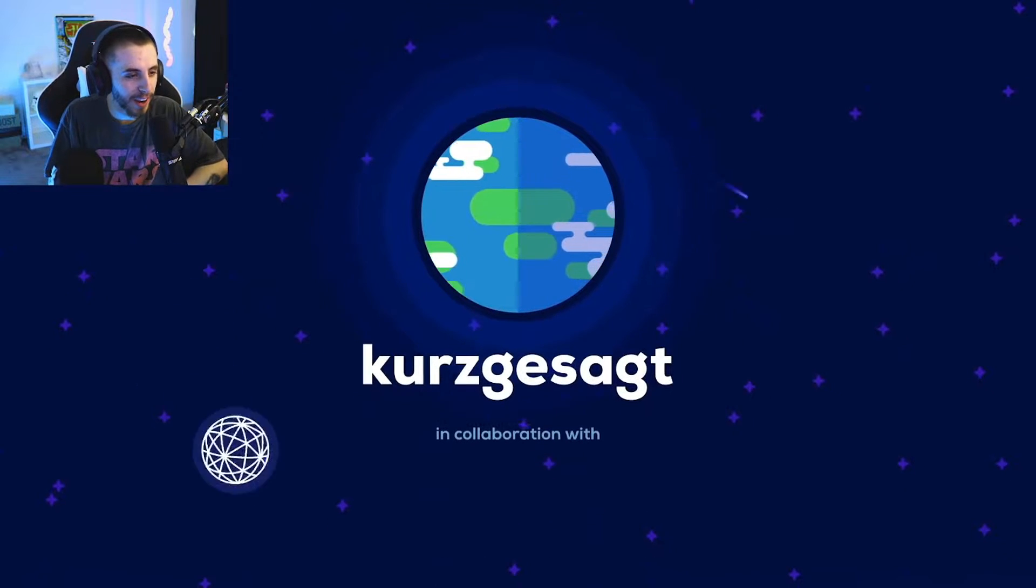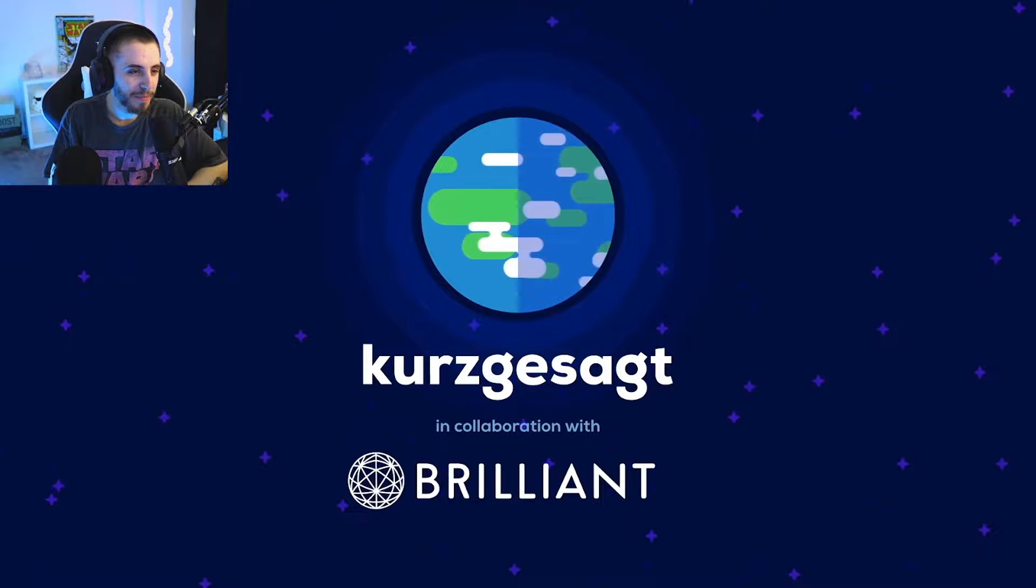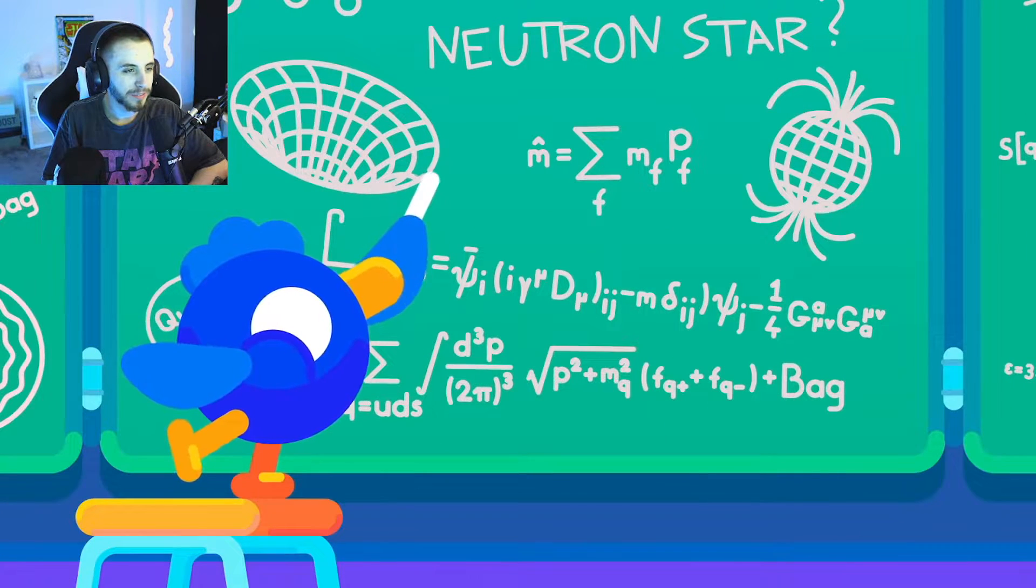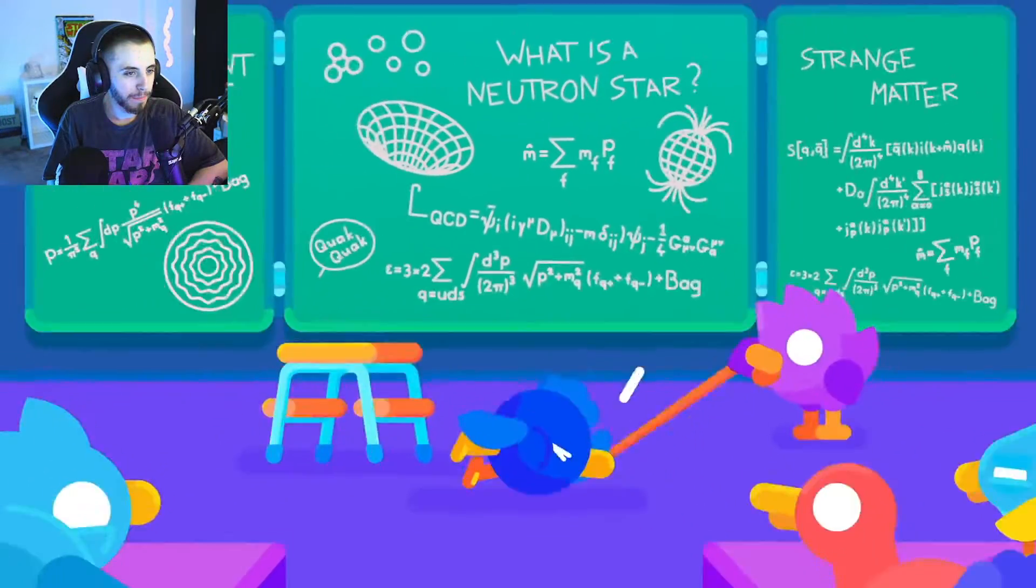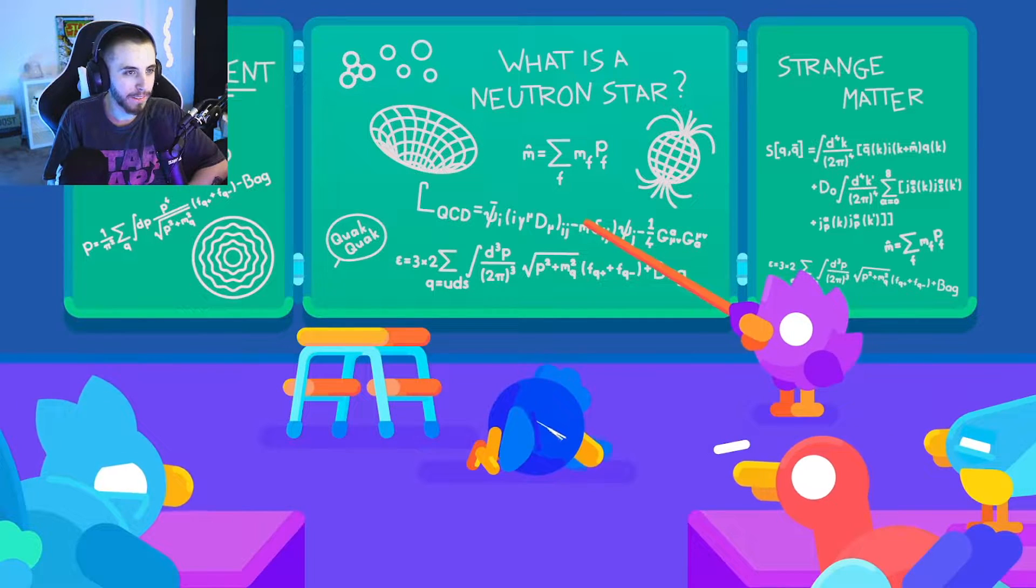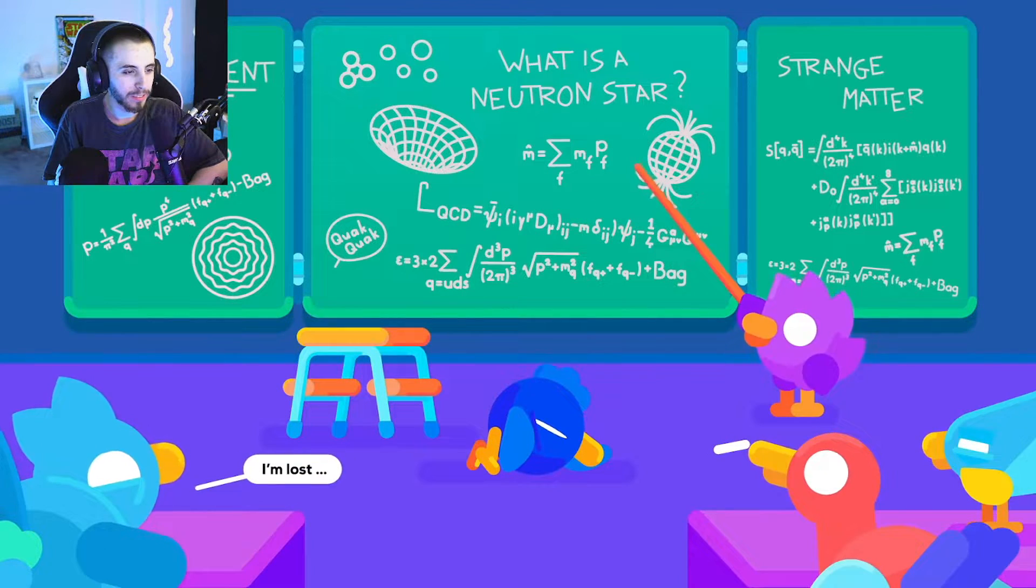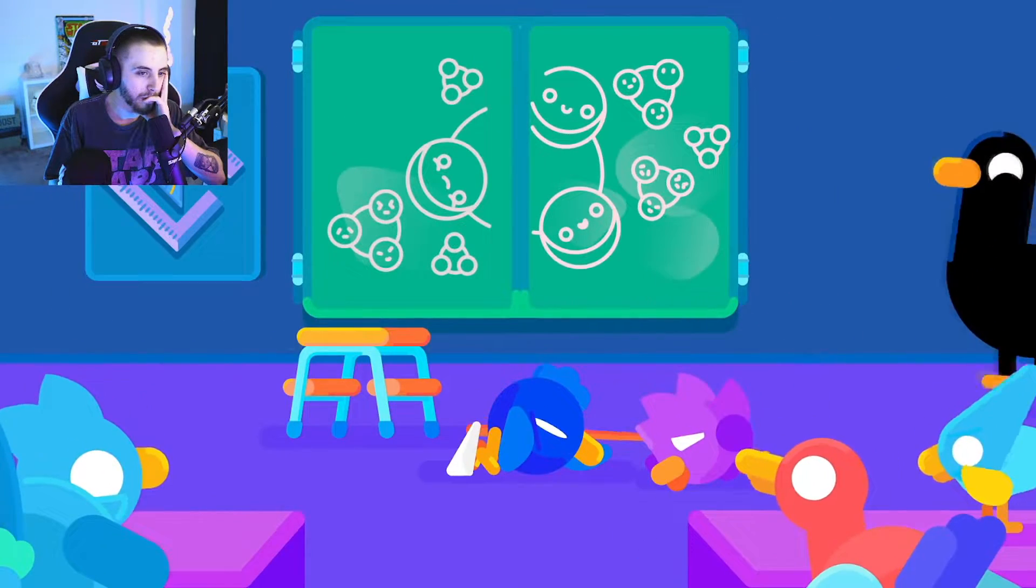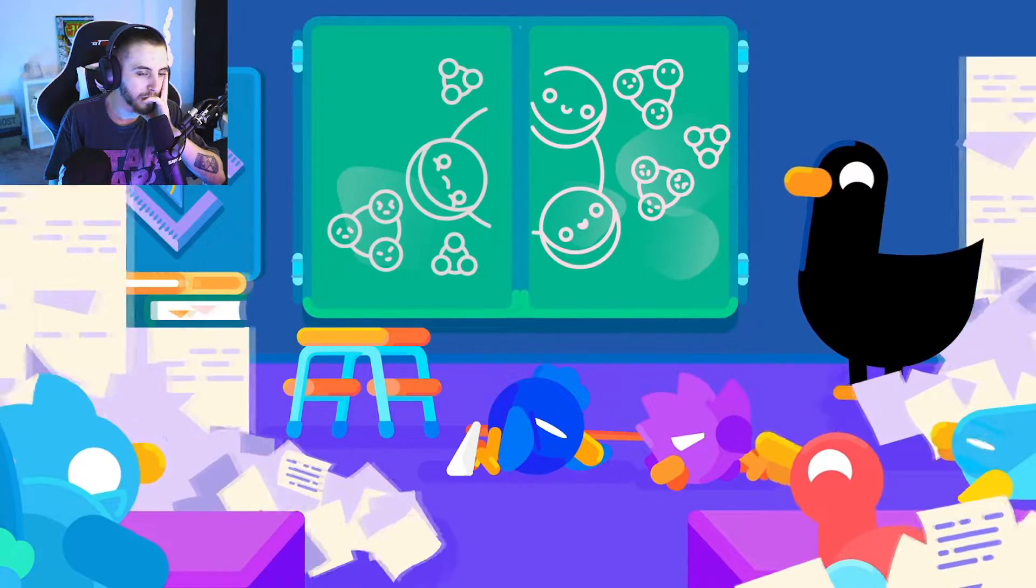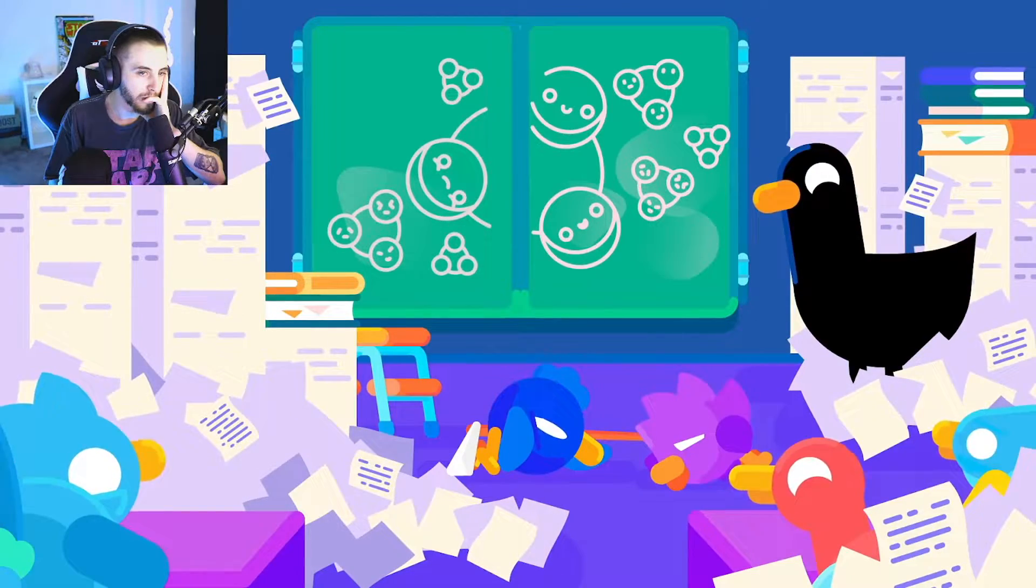I bet that's a good idea right there. To understand how extreme strange matter really is, we first need to get a few basics. What is a neutron star? Teach me! And how does strange matter break the rules of the universe? To get all of this into one video, we'll grossly oversimplify a few things, but we'll provide you with further reading if you want more details.